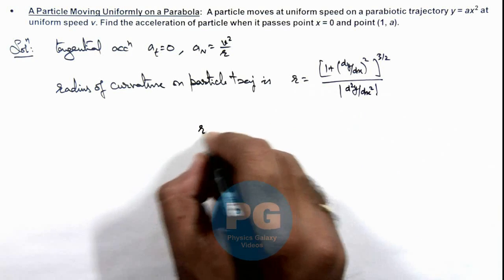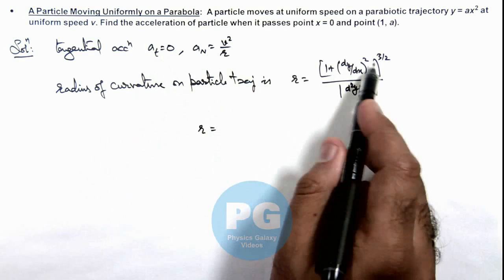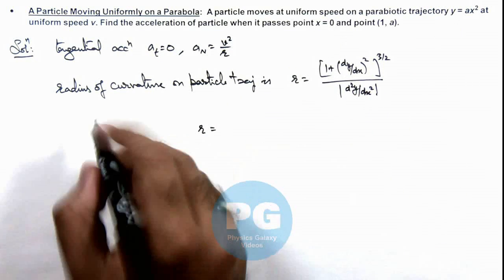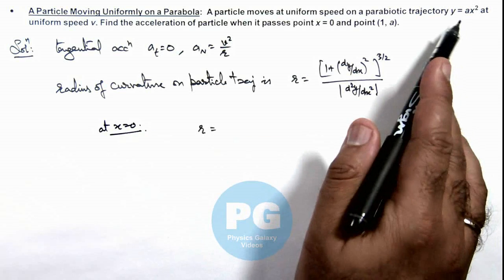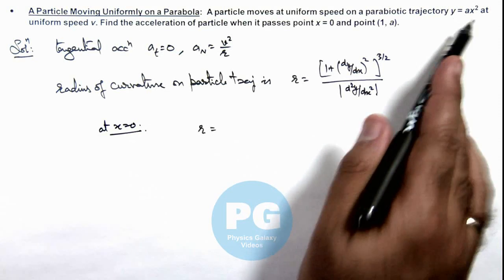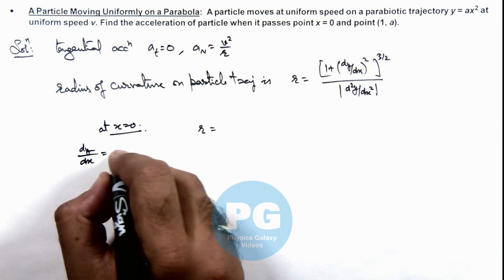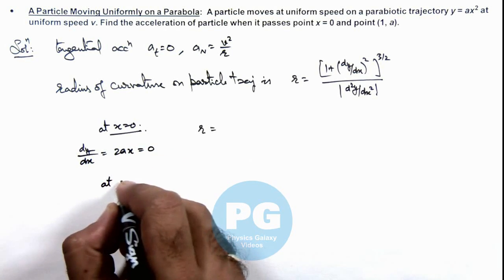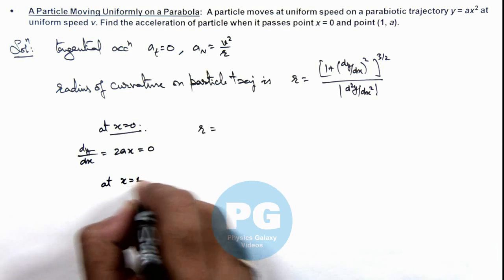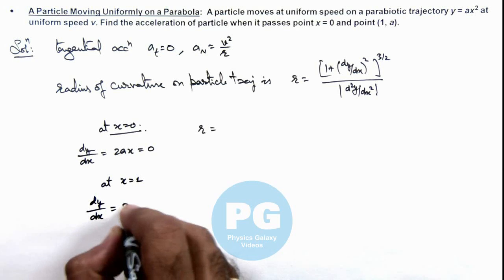So here the value of r we can write as: we can see at x = 0. If we calculate, first we calculate at x = 0. Then we can directly see here at x = 0 the value of dy/dx = 2ax = 0.